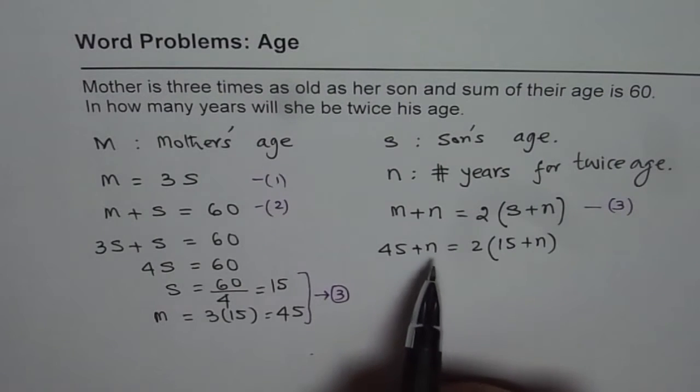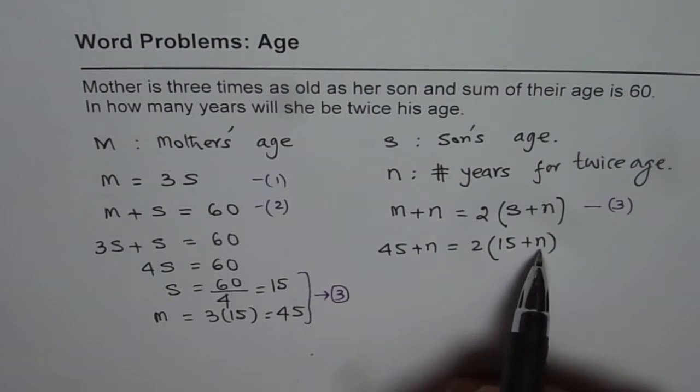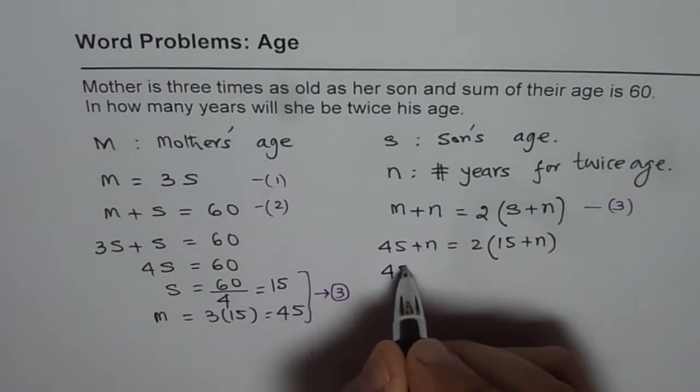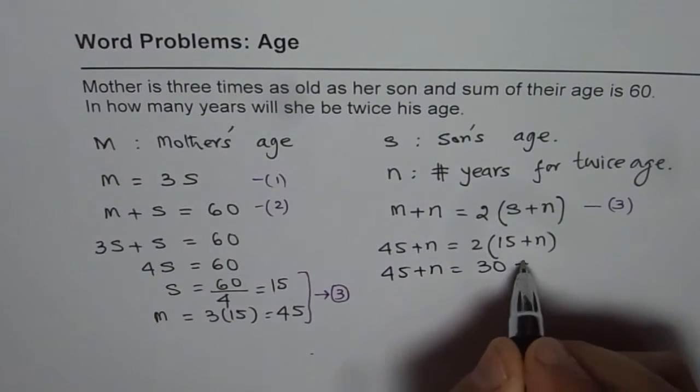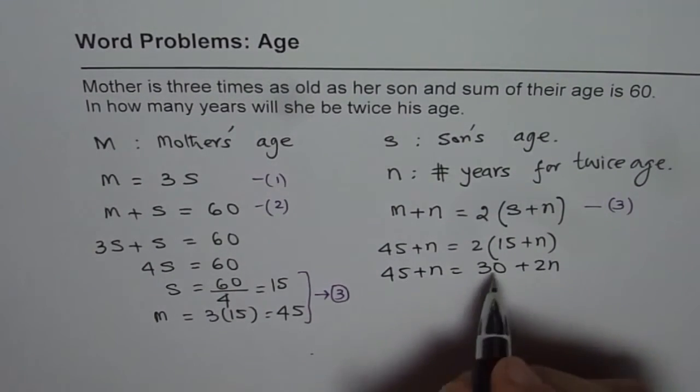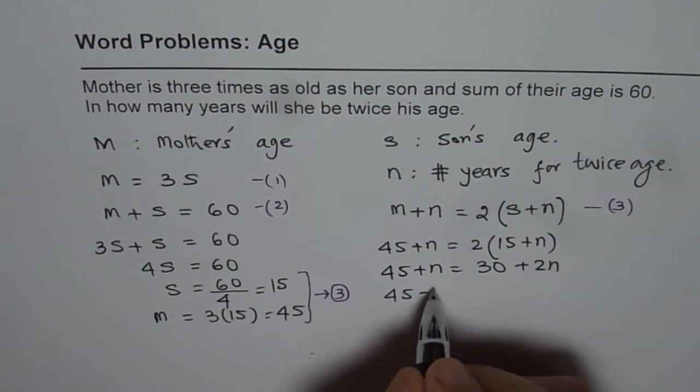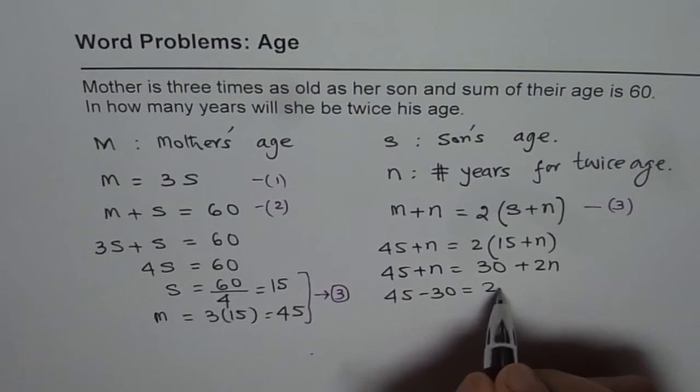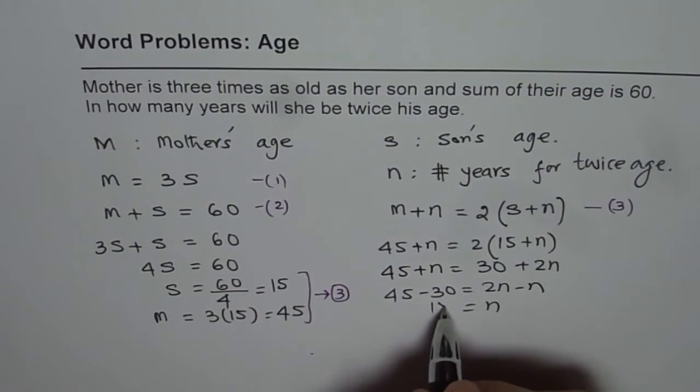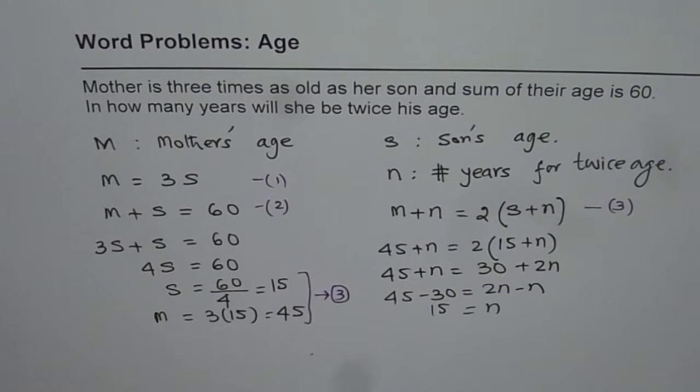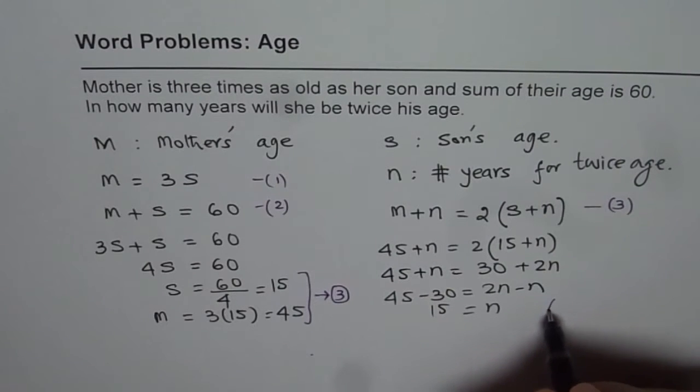Now we can calculate. We have only one variable here, that is N. So we have 45 plus N equals 2 times 15 is 30 plus 2N. Bringing 30 to the left side, 45 minus 30 equals 2N minus N, or N equals 15. And therefore we get our answer, that is 15 years.